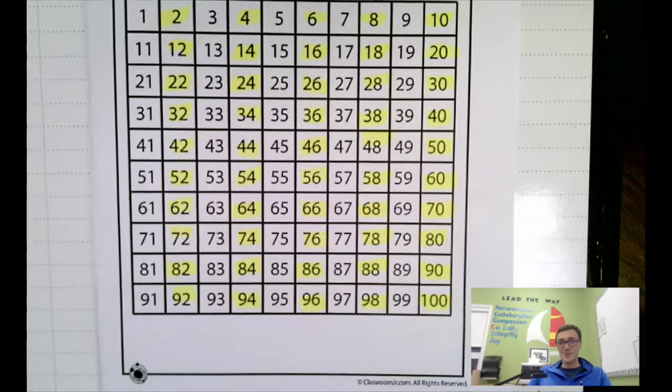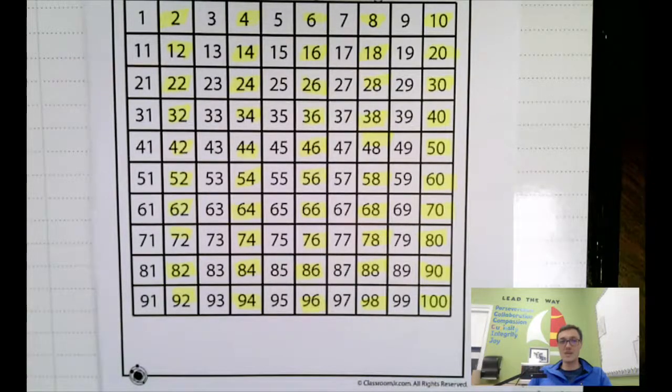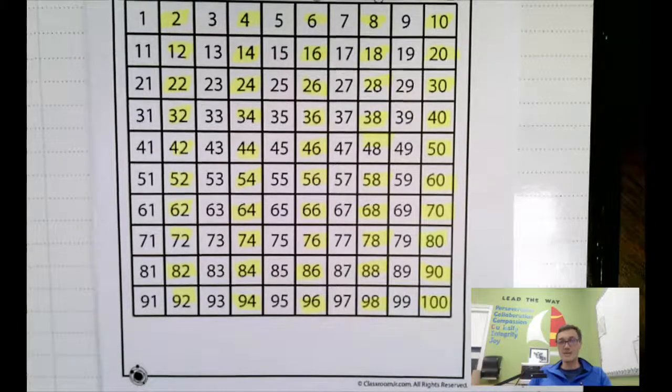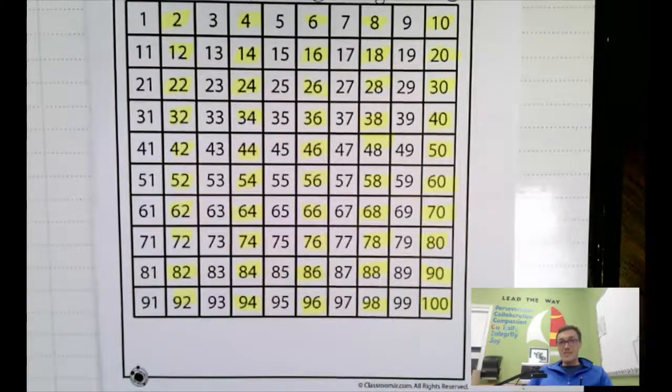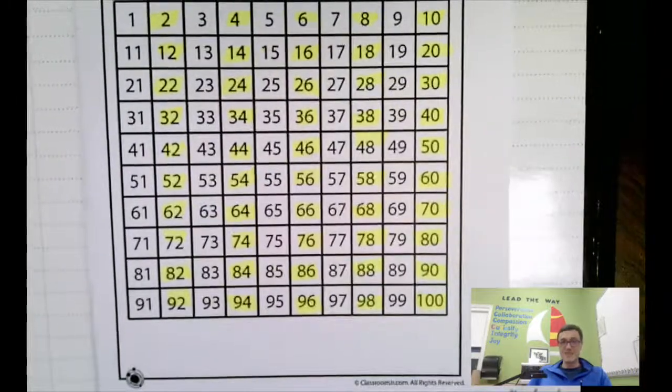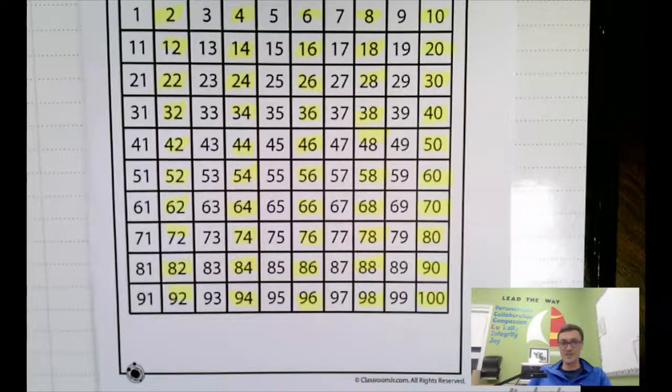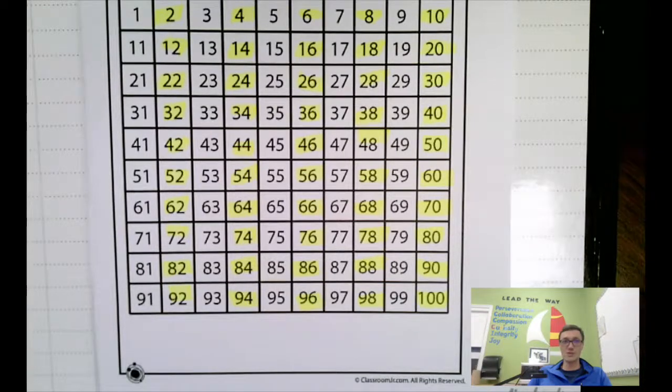Let's see. We were at 90, so then it'll be 88, 86, 84, 82, 80, 78, 76, 74, 72, 70, 68, 66, 64, 62, 60, 58, 56, 54, 52, 50.